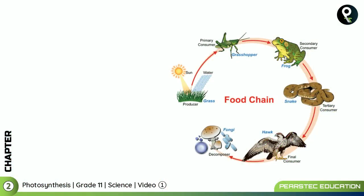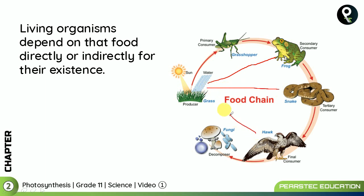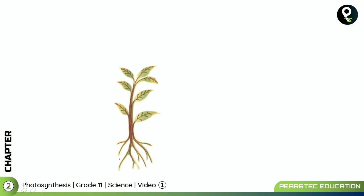Look at this food chain. Living organisms depend on food directly or indirectly for their existence. This frog over here also depends on the grass; the snake depends on the grass; and the final consumer also depends on the grass — even the fungi. These organisms are not directly dependent — the frog has an indirect dependency on the grass. All living organisms depend on food directly or indirectly for their existence.